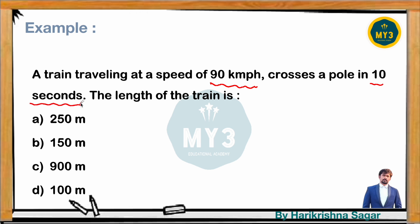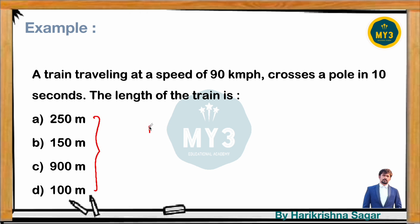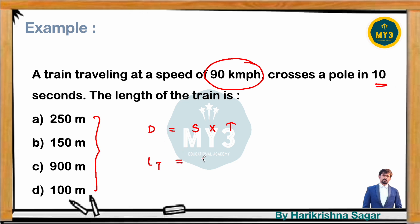The options are 250 meters, 150 meters, 900 meters, and 100 meters. Since the options are in meters, we need to find distance. Distance equals speed into time. Here distance is the length of the train. So length of the train equals speed of the train into time taken to cross the pole.